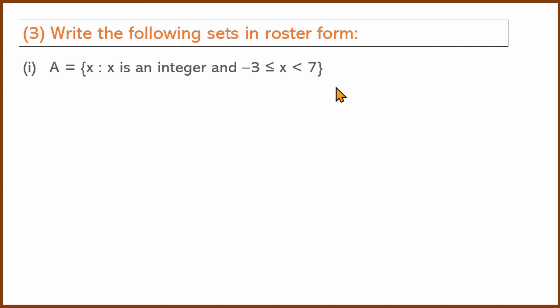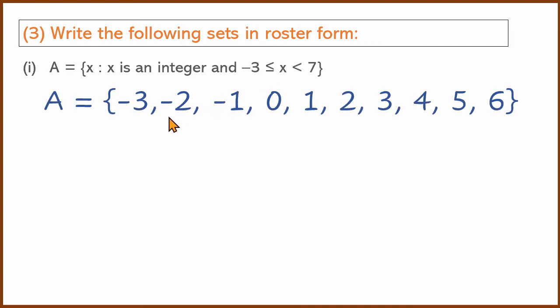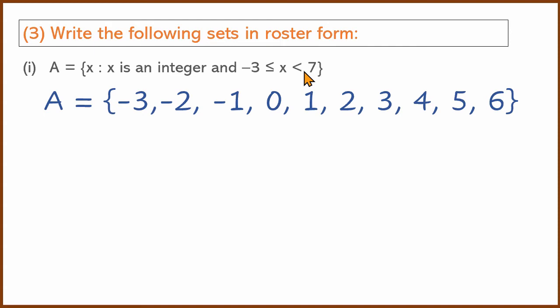First: x is an integer such that −3 ≤ x ≤ 7. Integers range from negative infinity through 0, 1, 2, 3... The elements satisfying this condition are −3, −2, −1, 0, 1, 2, 3, 4, 5, 6, 7. This is the roster form.